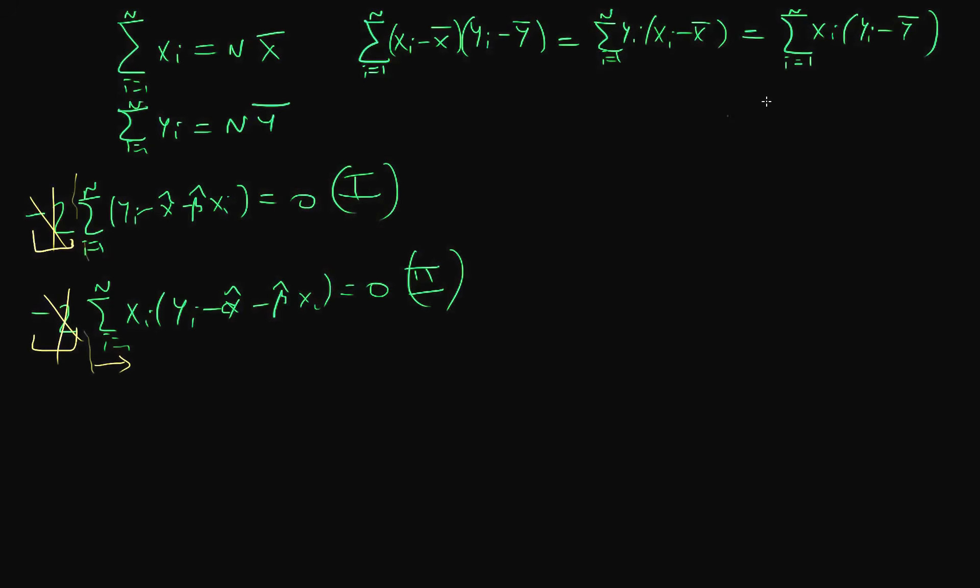So using the first first-order condition, because it's a linear sum I can just take the alpha hat and beta hat components over to the other side. That means the sum of yi is going to be equal to alpha hat times the sum from i equals 1 to n of 1, plus beta hat times the sum from i equals 1 to n of xi.